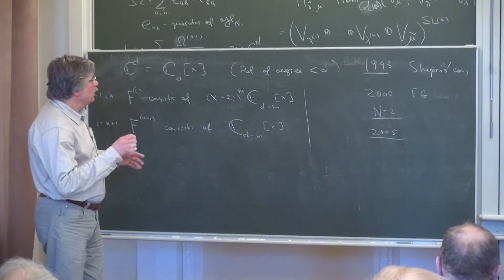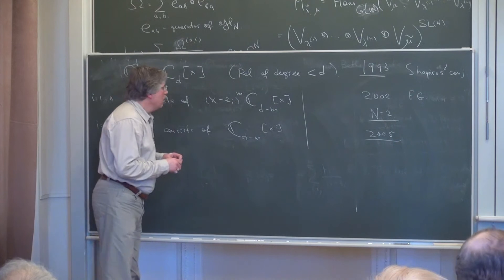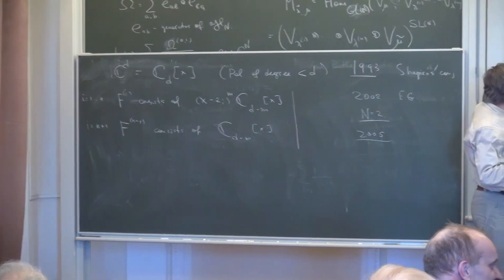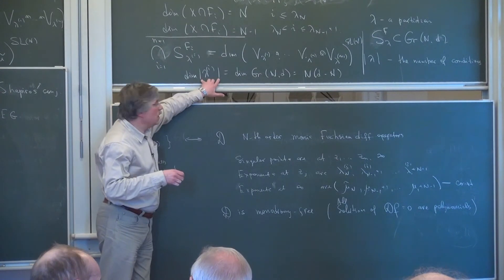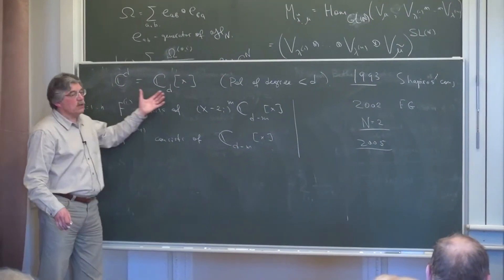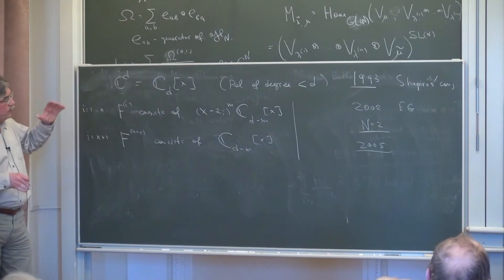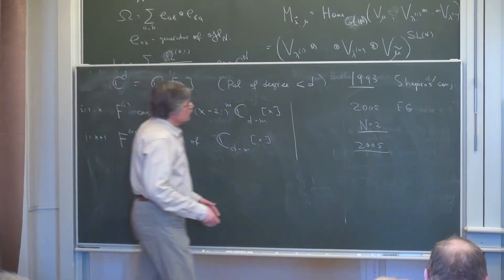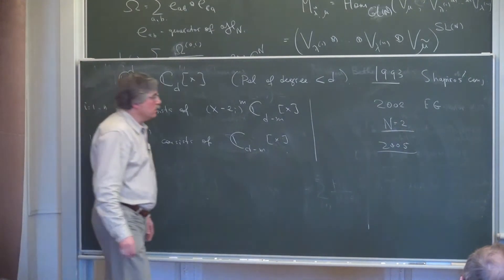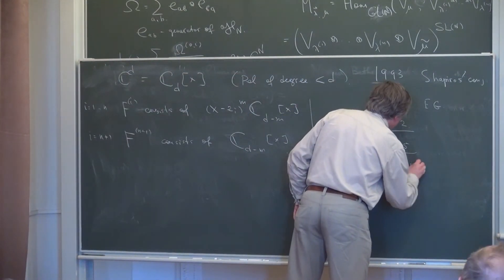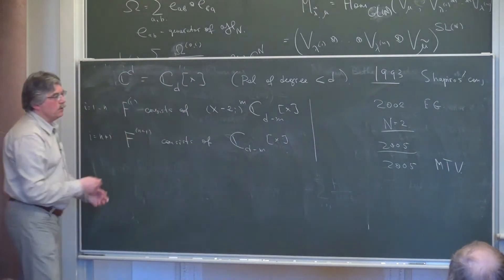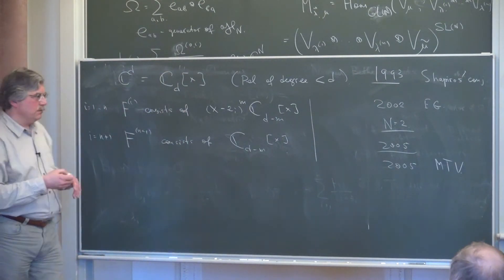This means the intersection points are represented by spaces of polynomials with real coefficients — a very natural reality condition. That is called the Shapiro conjecture. It was open for several years. Eremenko and Gabrielov proved it for the case of the Grassmannian of two-planes in 2005 by natural combinatorics. In the same 2005, but a bit later, we proved it for general n using integrable models.